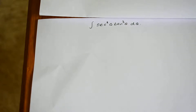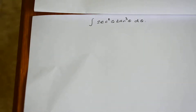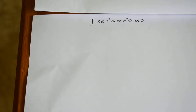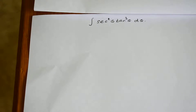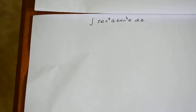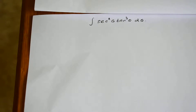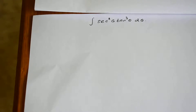Hi everyone, welcome back to my YouTube channel. Today I am going to do another example of how to do u-substitution with a fairly difficult example. Consider this integral: the integration of secant squared theta times tangent theta to the power 3, d theta. If you see something like this, you might think this is very difficult to solve because you have a couple of trig functions.